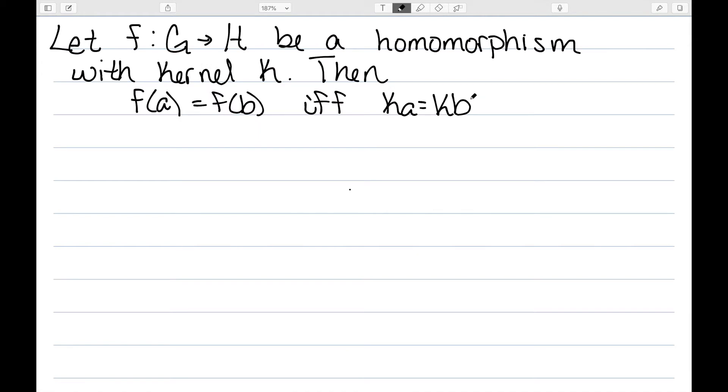The first thing I need to show, I'm going to let F go from G to H be a homomorphism with kernel K. Then F(A) is equal to F(B) if and only if the coset KA is equal to the coset KB.